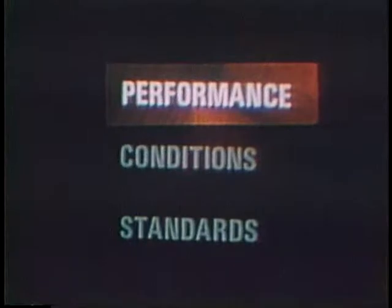In writing the criterion test, we focus attention on the three basic elements of the objective: performance, conditions, and standards — P, C, S. The objective gives us the performance to be measured, the conditions for performance, and the minimum acceptable standards.